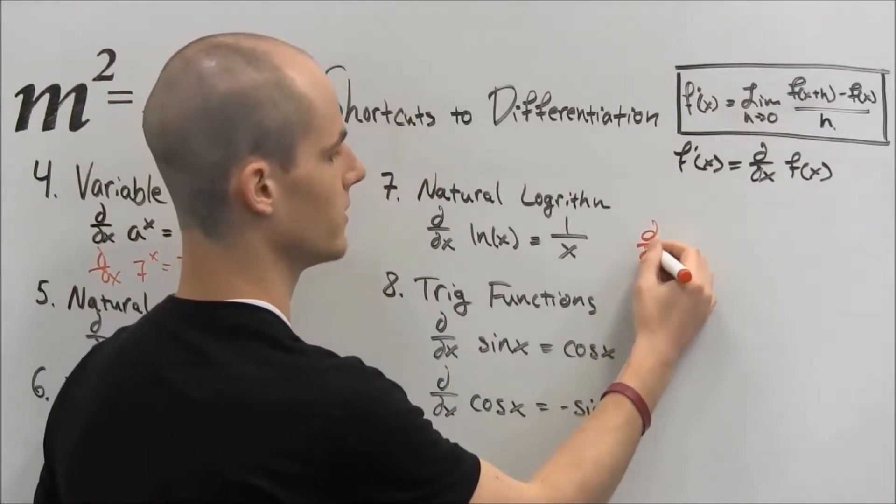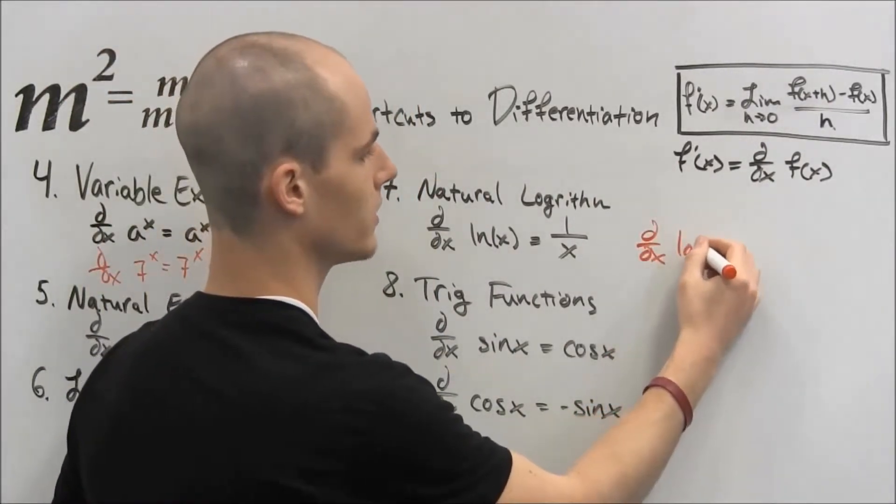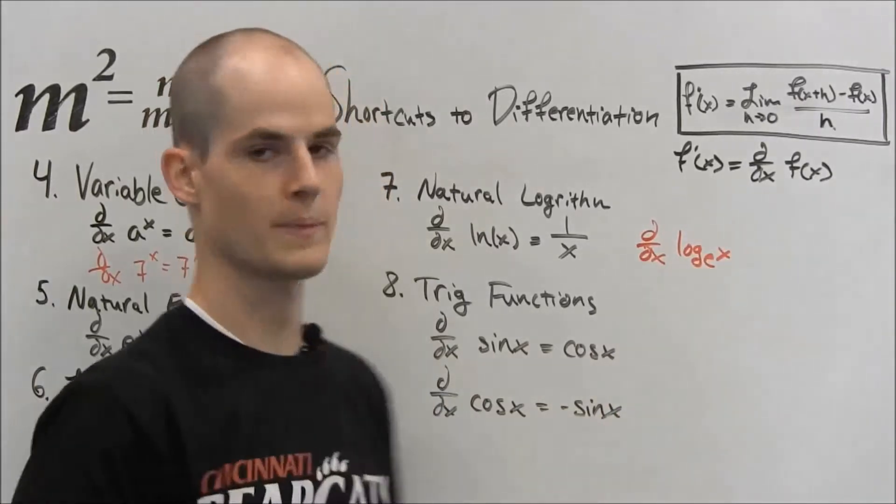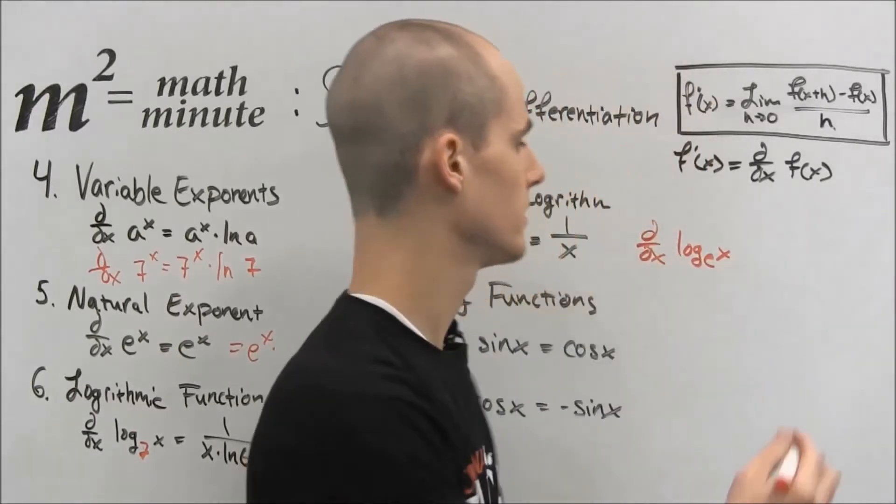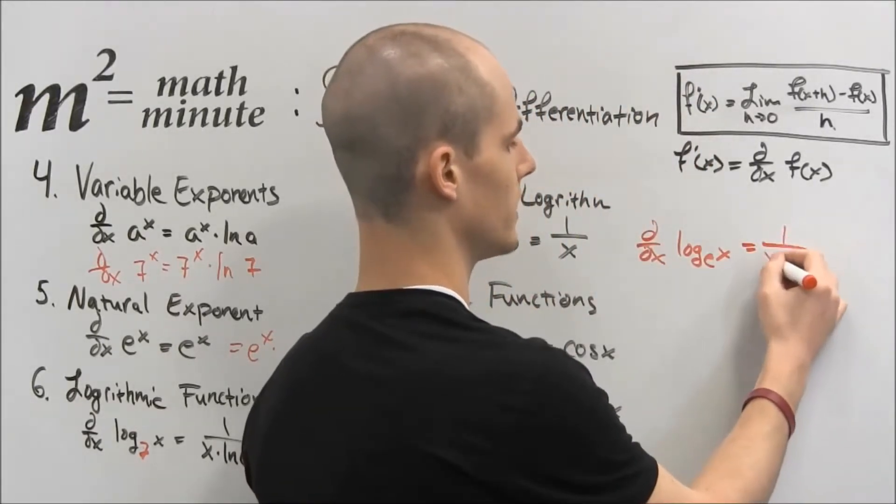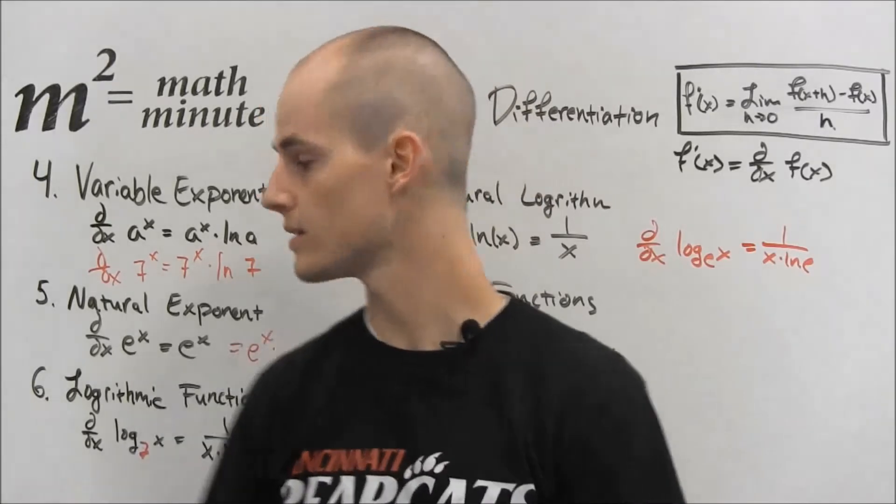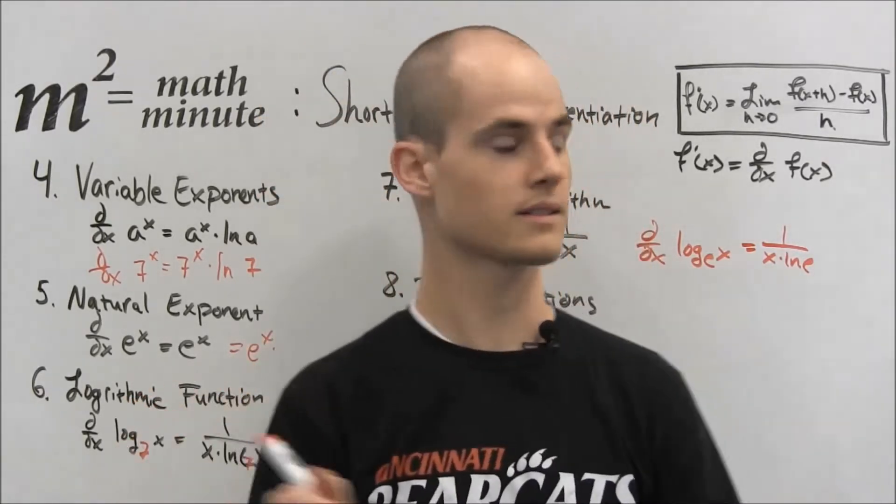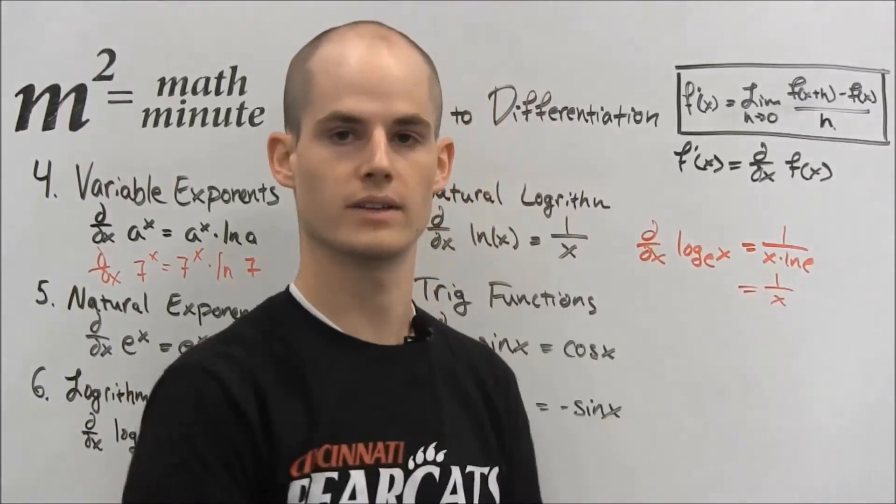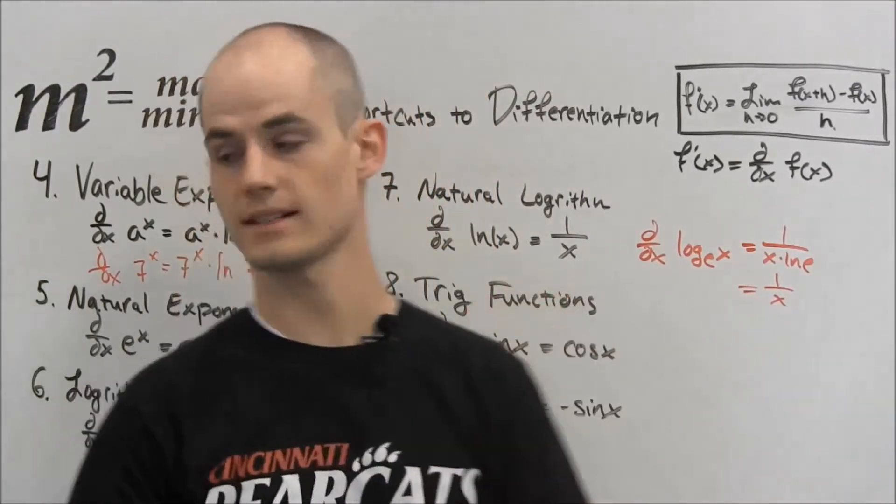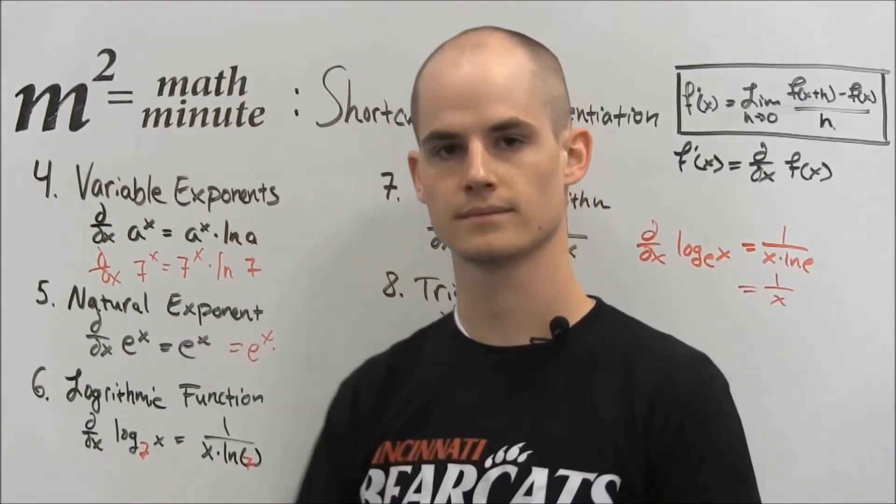If we had the derivative of log base e of x, now applying this, this is just 1 over x ln of e. 1 over x times ln of e. And very similar to why this just equals e to the x, this just equals 1 over x because ln of e equals 1. So this is an extension of this.